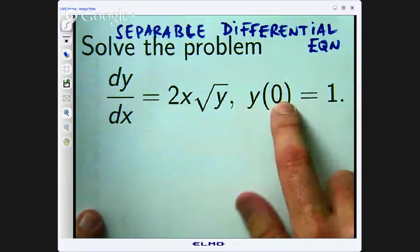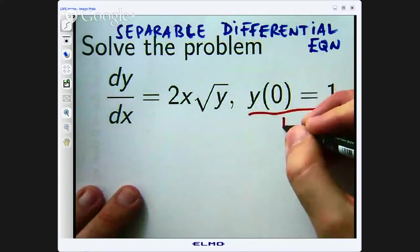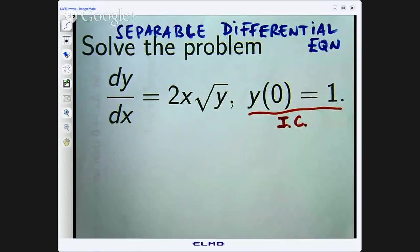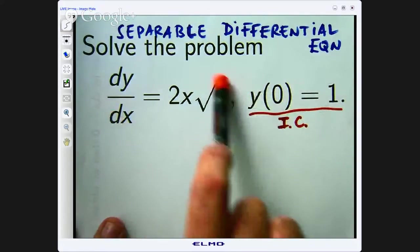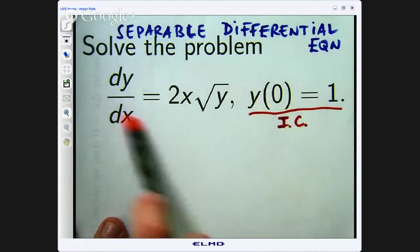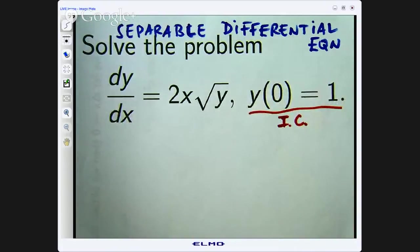Now we have a little piece of extra information over here. This is called an initial condition. This means that we know the precise value of the solution to this problem at one point. When x equals 0 the solution to this differential equation y equals 1. We can use both of these bits of information to come up with a solution.